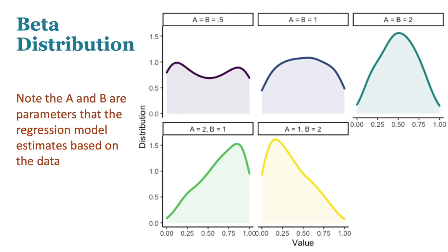The beta distribution has two parameters, A and B, which the regression model figures out while fitting to the data. Looking across the distributions, you can see quite a wide variety. The beta regression can handle a bimodal shape, a really round hill, something more normal, and highly skewed distributions — both at the top or the bottom. It's a really flexible approach that can handle a lot of different shapes that often come with bounded outcomes.